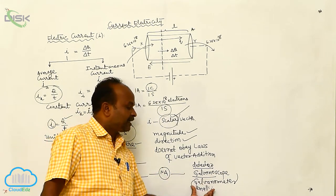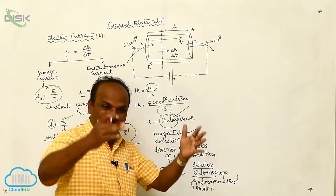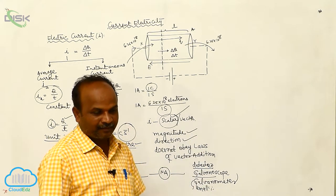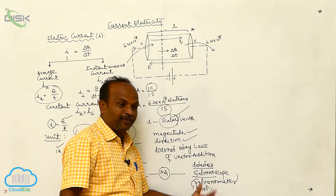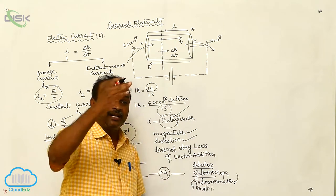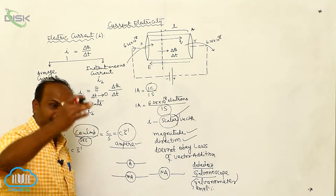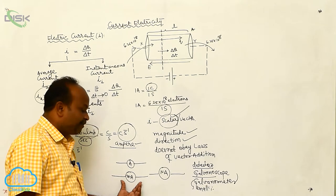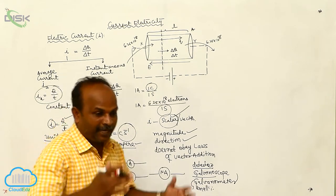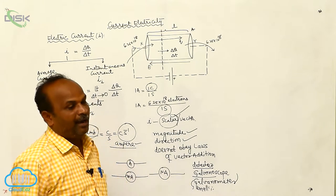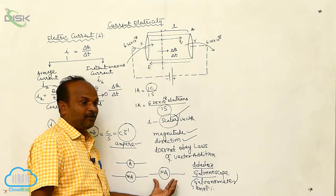Small amounts of current can be measured by the galvanometer, whether the electric current is present or not can be detected by the galvanoscope. The current in amperes can be measured by an ammeter. Current in milliamperes can be measured by a milliammeter. The microamperes of current can be measured by microammeters.